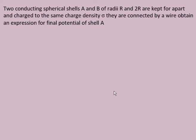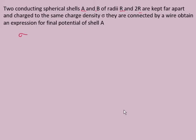Two conducting spherical shells A and B of radii R and 2R are kept far apart and charged to the same charge density sigma. They are connected by a wire; find an expression for the final potential. So there are two shells A and B with radii R and 2R, kept far apart and charged to the same surface charge density sigma.